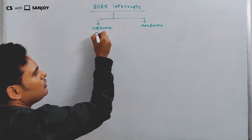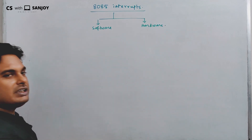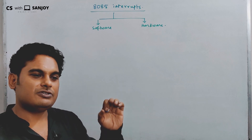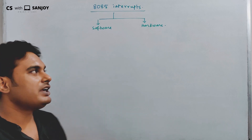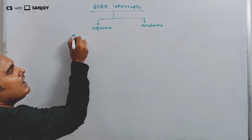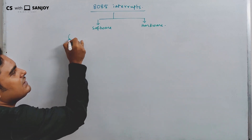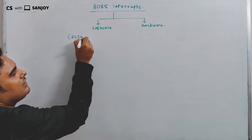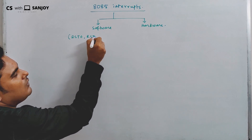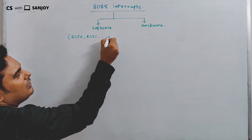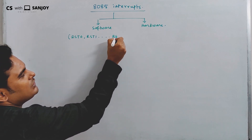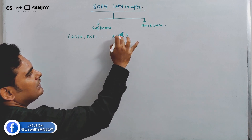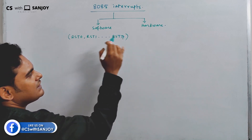Software interrupts are generally executed through instructions. There are 8 such instructions, starting from RST 0, RST 1, RST 2, all the way to RST 7. There are 8 such interrupts in total.